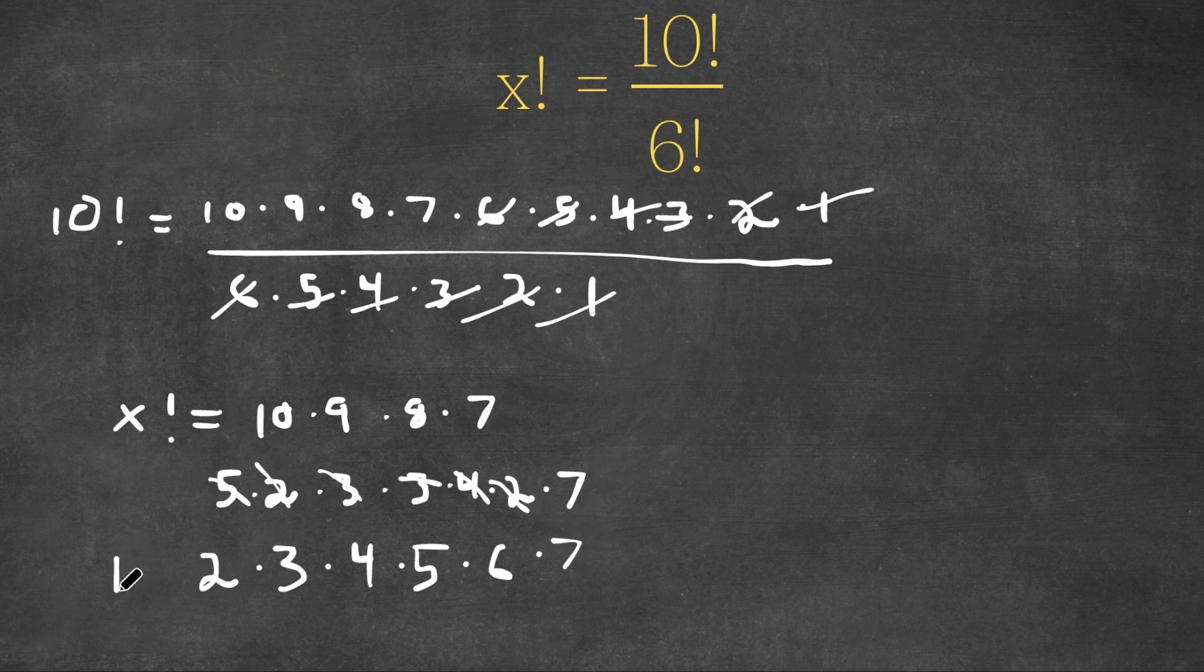So we could think of 1 times this because it's 1 times anything itself. And as you can see, this is equal to 7 factorial because it's 7 times 7 minus 1 times 7 minus 2 going on until 1. So this means that x is equal to 7.